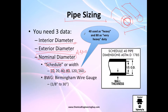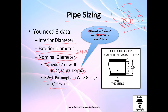In normal engineering applications, we mainly use schedule 40 or schedule 80. Schedule 40 is for heavy applications such as pressurized water movement, and schedule 80 is for very heavy duty applications like moving heavy oil or petroleum. We also have the BWG — Birmingham Wire Gauge — standard, which is also based on inches.